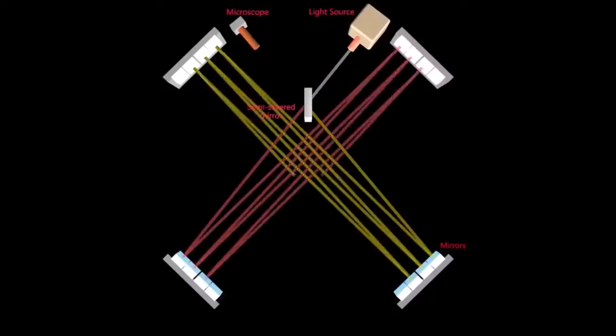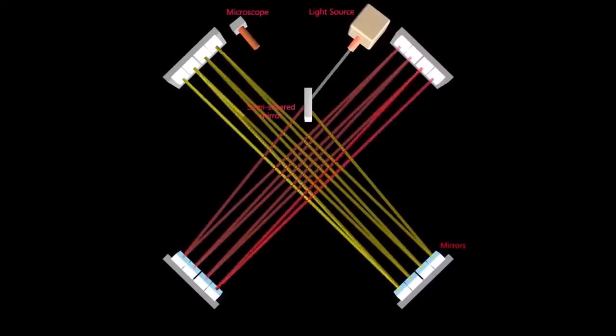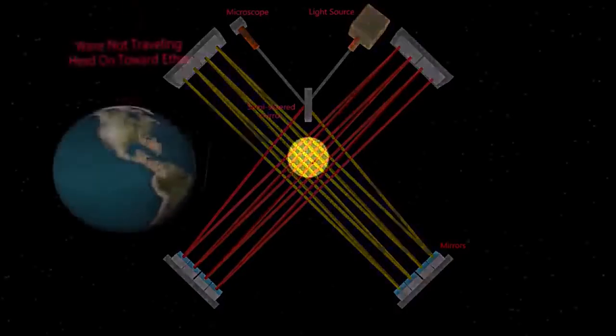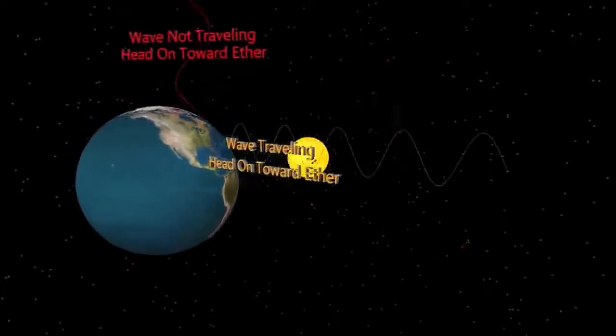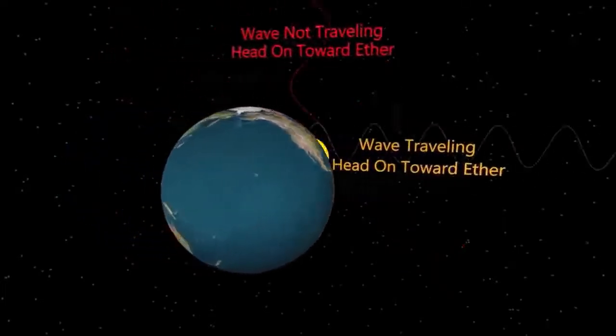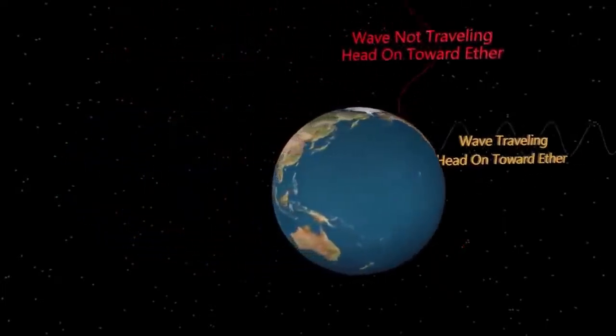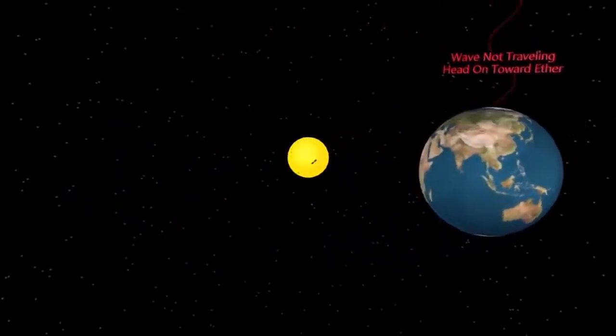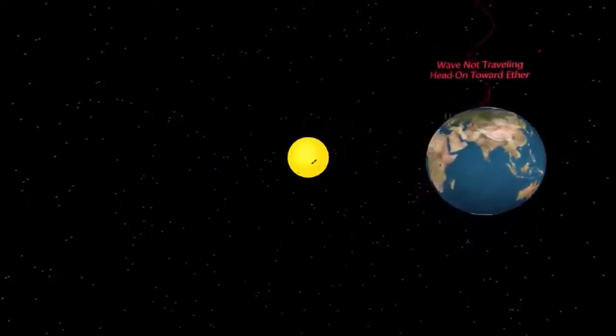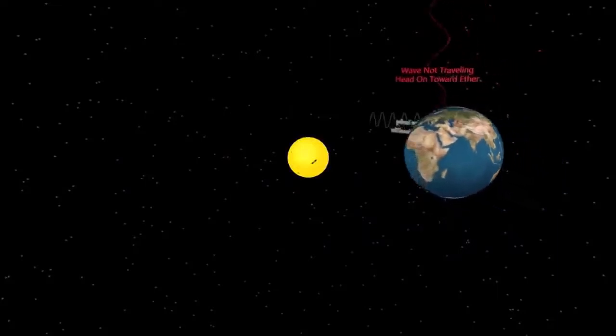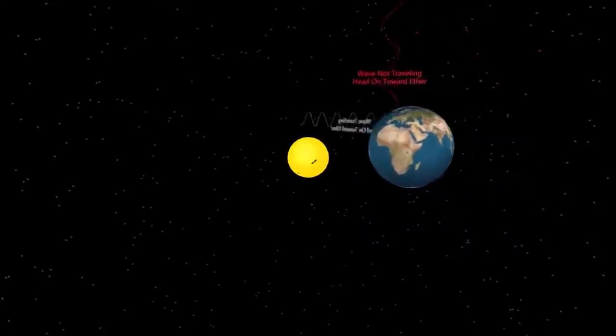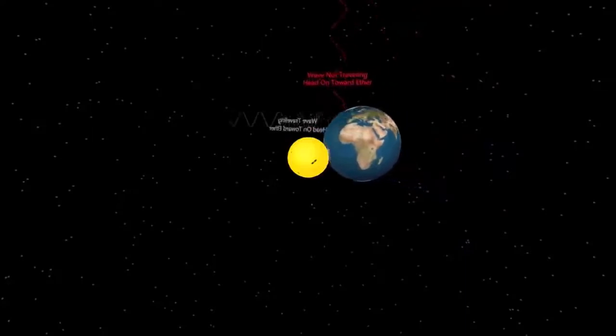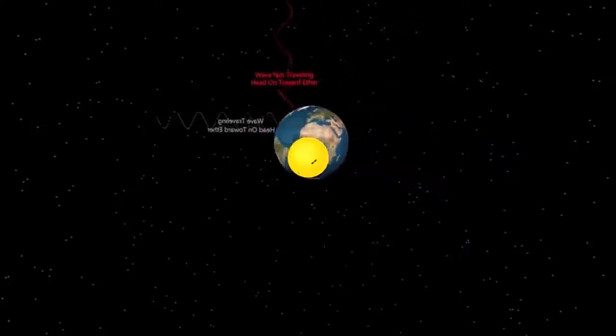The first light beam was pointed westward because it was the presumed direction of the earth's movement around the sun. The second light beam was pointed northward, and thus away from the direction of the presumed moving earth. The first light beam should have been affected by earth's movement through space if the earth is moving around the sun at an accepted speed of 66,000 miles per hour. If so, the first beam would have traveled slower than the second beam of light. But that didn't happen.